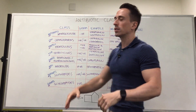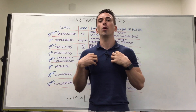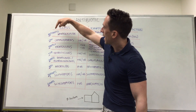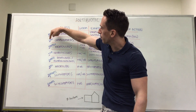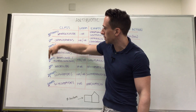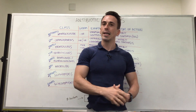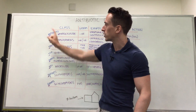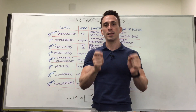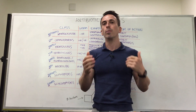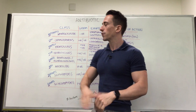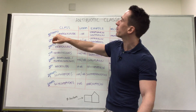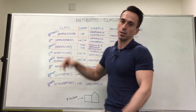Now I've created my own mnemonic that helps me remember these classes. The mnemonic is: antibiotics can protect the Queen's men, servants and guards. It's pretty dumb but it helps me. Take the first letter of each word and that's the first letter of an antibiotic class. So starting at the beginning — A stands for aminoglycosides.